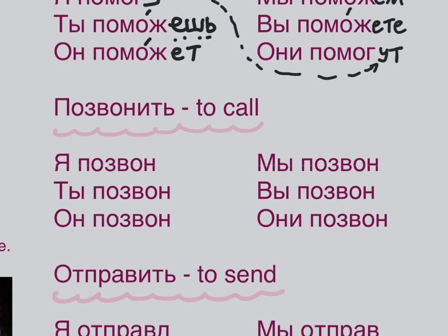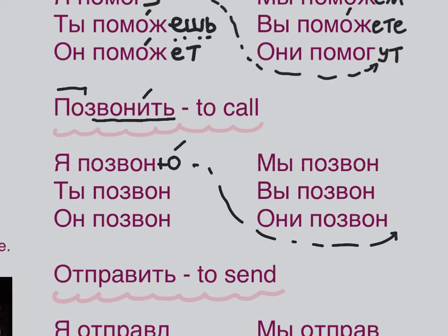The verb is ПОЗВОНИТЬ — to call — stress falls on ИТЬ. That's a perfective verb; imperfective is just ЗВОНИТЬ. Я ПОЗВОНЮ — stress on Ю. ТЫ ПОЗВОНИШЬ — it's the ИТЬ verb, so ИШЬ. Some Russian people from the south say ПОЗВОНИШЬ, but standard Russian is ПОЗВОНИШЬ. ОН ПОЗВОНИТ. МЫ ПОЗВОНИМ. ВЫ ПОЗВОНИТЕ. ОНИ ПОЗВОНЯТ.